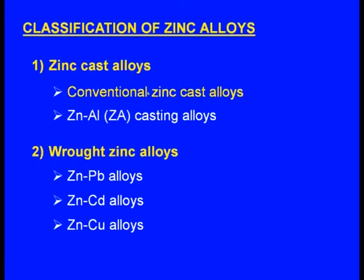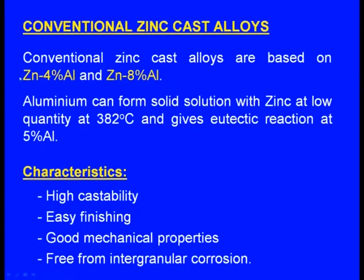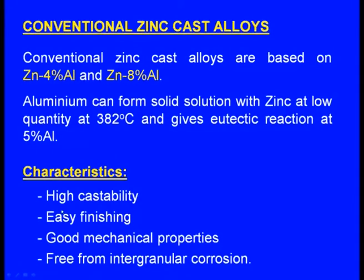Conventional zinc cast alloys are based on zinc with 4 percent aluminum and zinc with 8 percent aluminum. Aluminum can form solid solution with zinc at low quantity at 382°C and gives eutectic reaction at 5 percent aluminum. Characteristics of conventional zinc cast alloys: high castability, easy finishing, good mechanical properties, and free from intergranular corrosion.